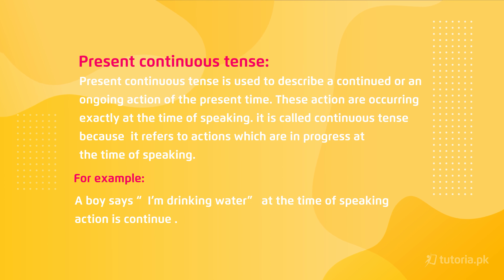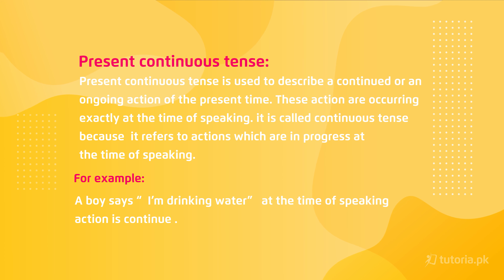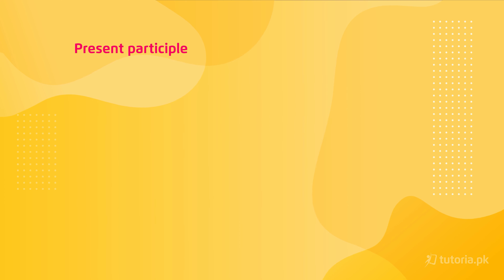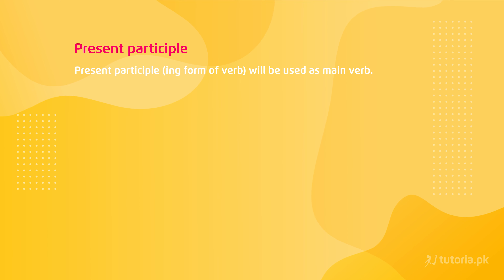Simply, present continuous tense is used for actions that are ongoing at the time of speaking. For example, a boy says 'I am drinking water' — it means that action, drinking water, is being done exactly at the time of speaking. So when a boy says 'I am drinking water,' at that exact moment that action is also happening.